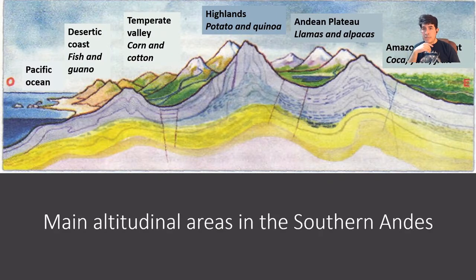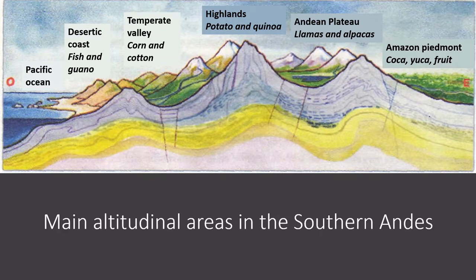This can be best appreciated in the following graphic. Here you can see how different altitude zones are characterized by different products. The Pacific Ocean allows fishermen to extract guano — natural fertilizer, accumulated bird excrement, which does not wash away due to the lack of rain. The temperate valley produces cotton and corn. The highland produces potato and quinoa, and also supports alpaca herds. The Amazon Piedmont yields yucca, coca leaves, and other fruit. Coca can also be produced on the lower western slopes.